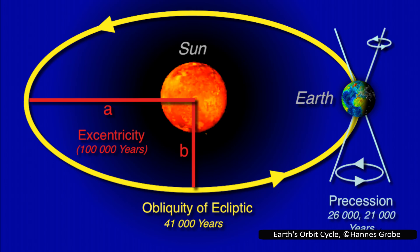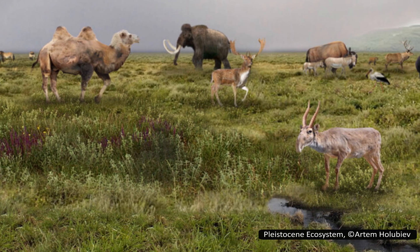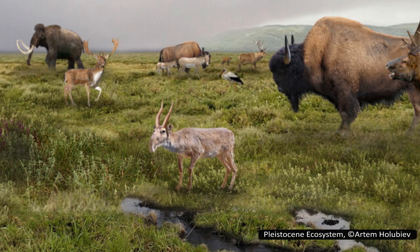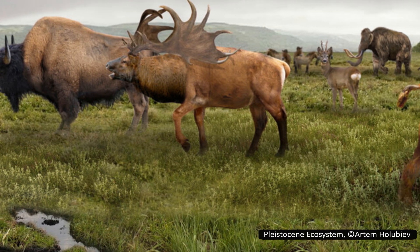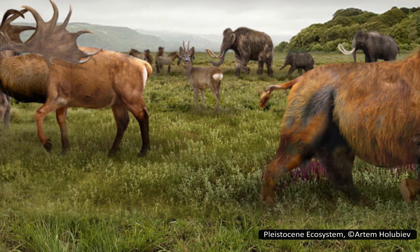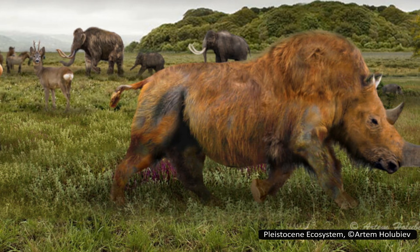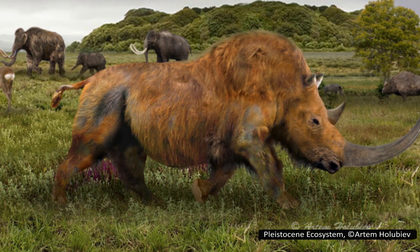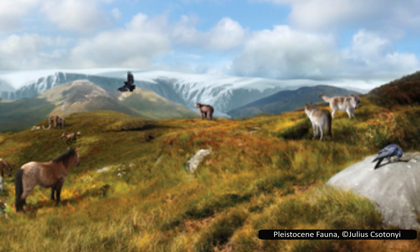Before the MPT, shorter and stronger cycles — like changes in the Earth's tilt every 40,000 years — had a bigger effect. After the transition, something shifted. The climate system started responding more strongly to the longer, weaker eccentricity cycle, leading to longer, deeper glaciations. It could have been any of these factors, a combination of them, or none of them — no one really knows. Whatever the cause, the effect was profound. Ice sheets became more persistent and massive, dramatically altering sea levels, rainfall patterns, and vegetation belts. These weren't gentle nudges; they were global environmental upheavals.